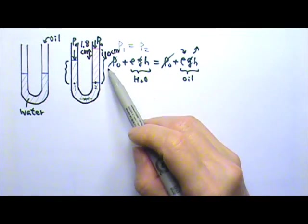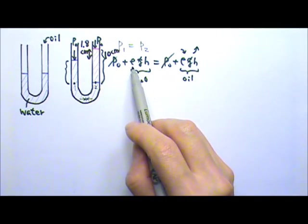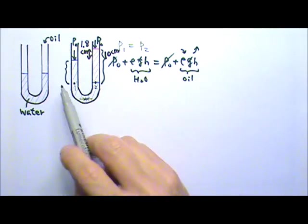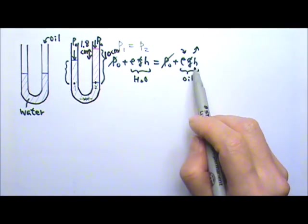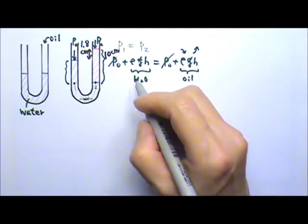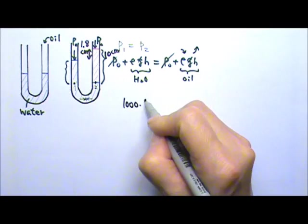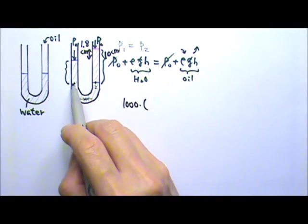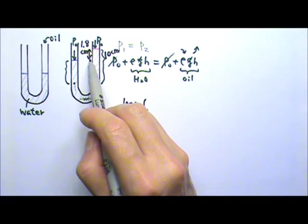After we cancel the P0 and cancel the g, what's left is the density of water times the height of the water column on this side equals to the density of oil times the height of the oil column on the other side. So the density of water is 1000.